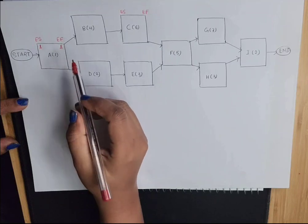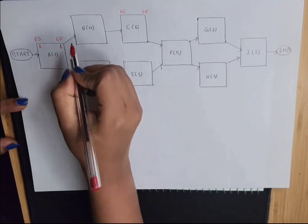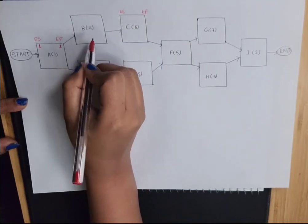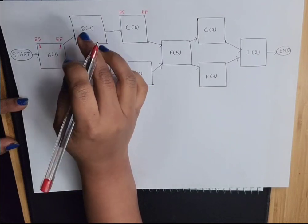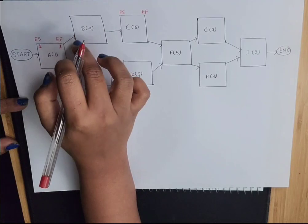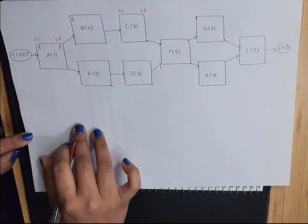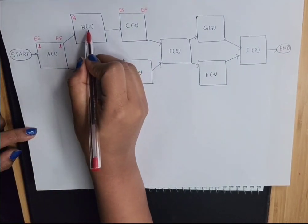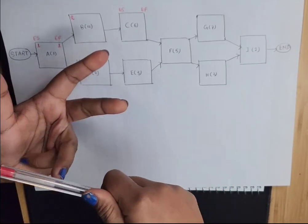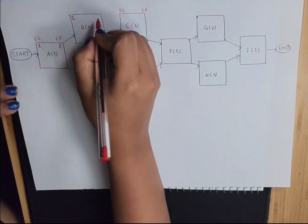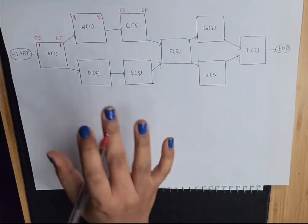After completion of activity A, we have two activities: B and D. Activity B will start once A is completed. Since activity A is completed on day one, activity B will start on day two. This activity takes four days to complete, so day two, three, four, five — it is going to complete on day five.